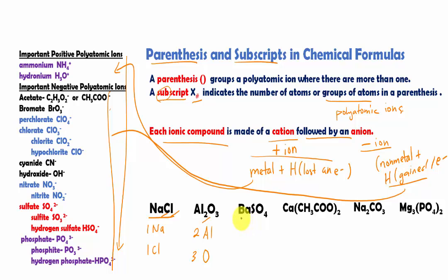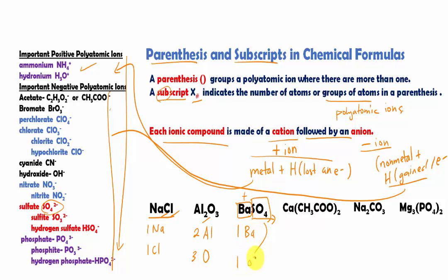Now let's look at a more complicated example: Ba. It doesn't have a subscript, so we know it's one Ba. Then we have SO₄. The golden rule is: once you identify your cation — which in most cases is the metal — the remainder must be the anion. If the remainder has more than one atom grouped together, it is a polyatomic ion. So SO₄ here is a polyatomic ion, which is sulfate. Since there are no parentheses, we assume there is only one of this polyatomic ion — one SO₄.